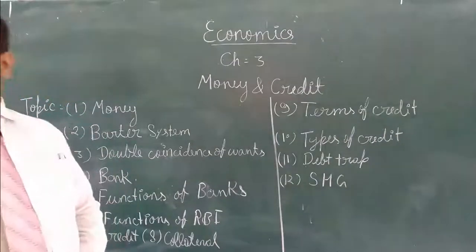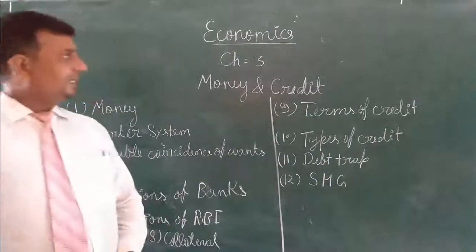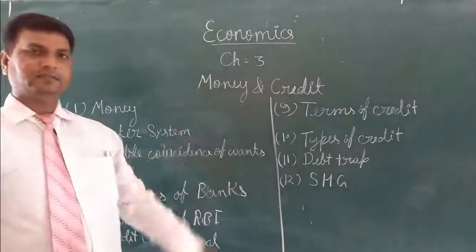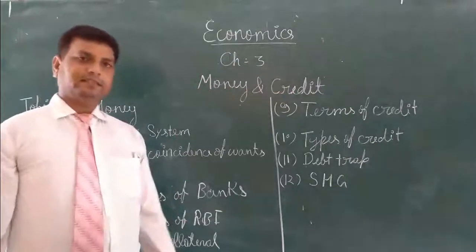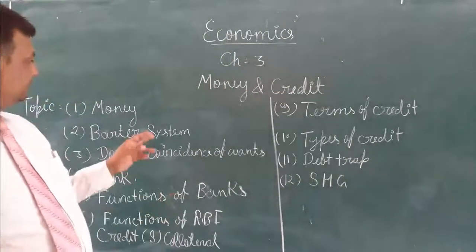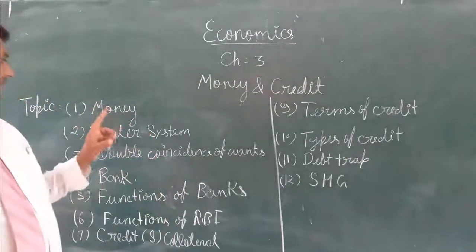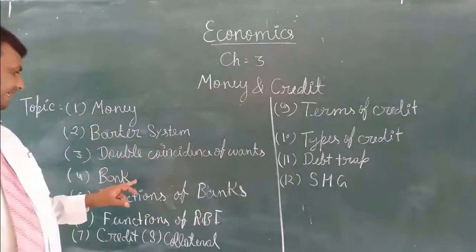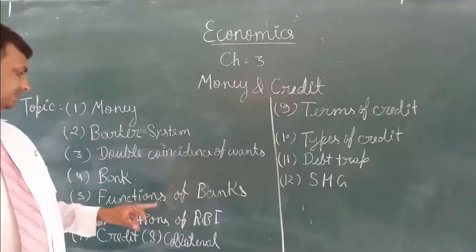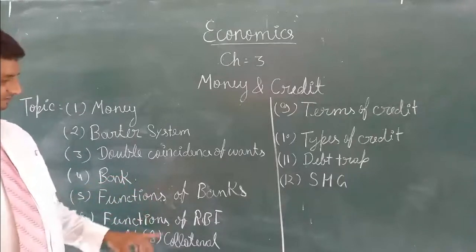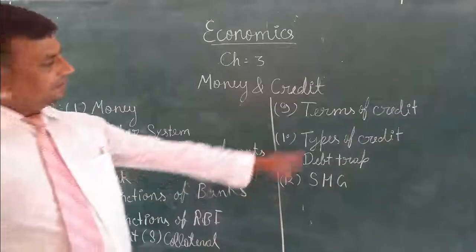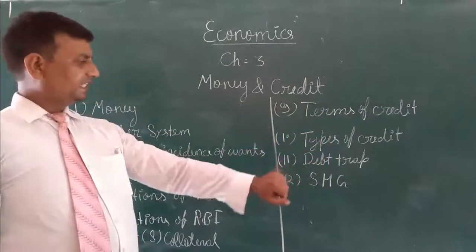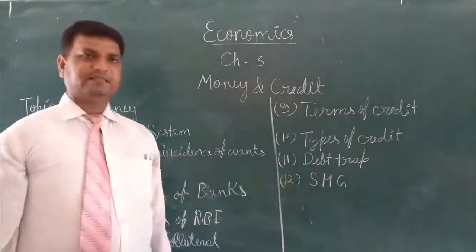So then, today I will explain the third chapter of economics, that is money and trading. This chapter includes topics: money, water system, double coincidence of wants, automax, bank, function of bank, function of RBI, trading, collateral, terms of trading, types of trading, debt trap, SHG, etc.